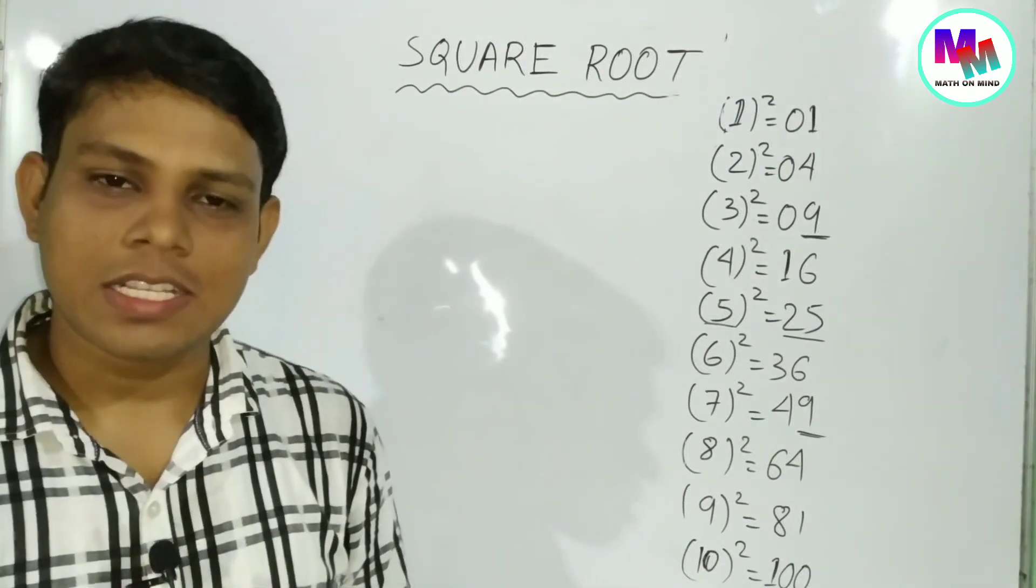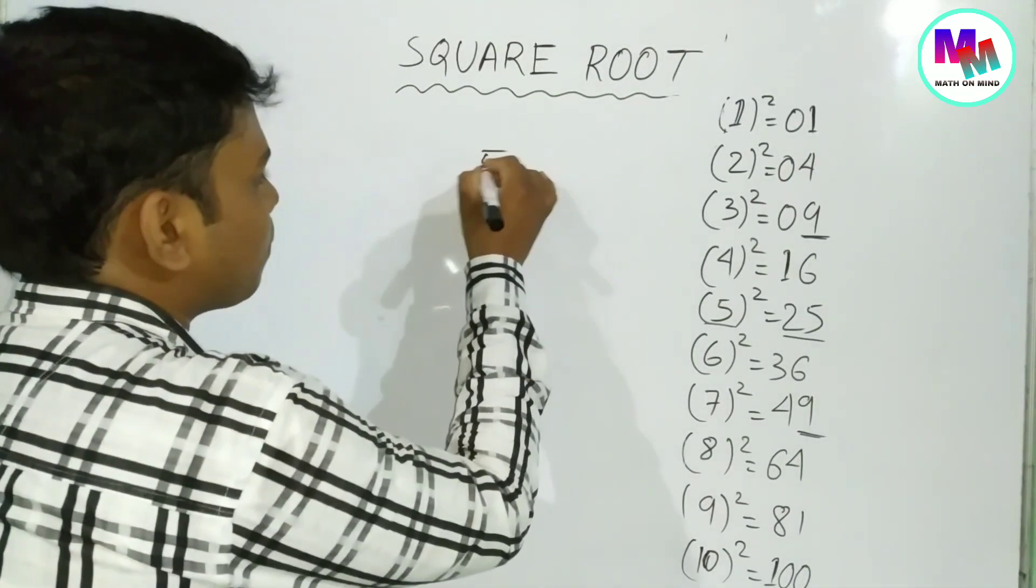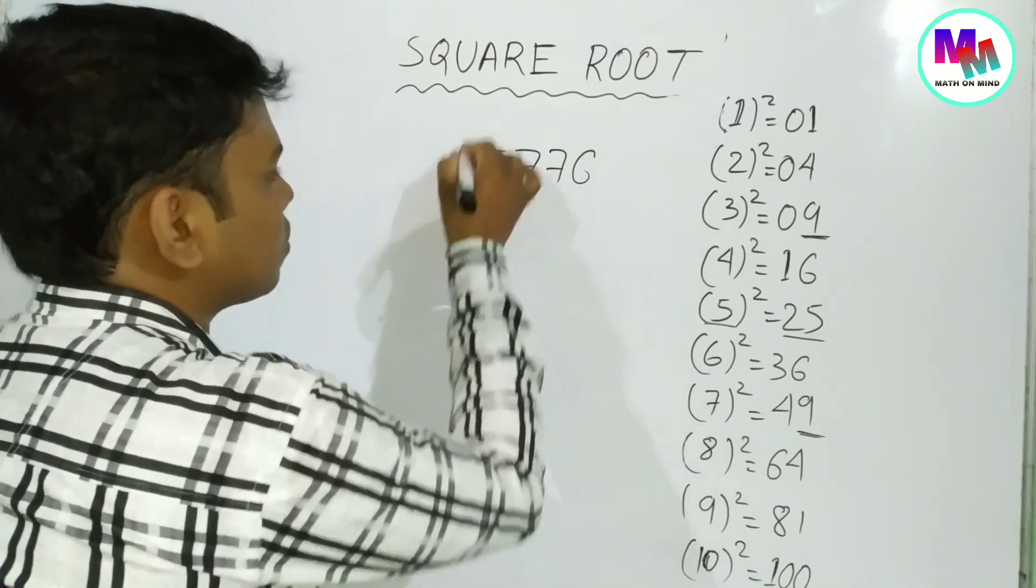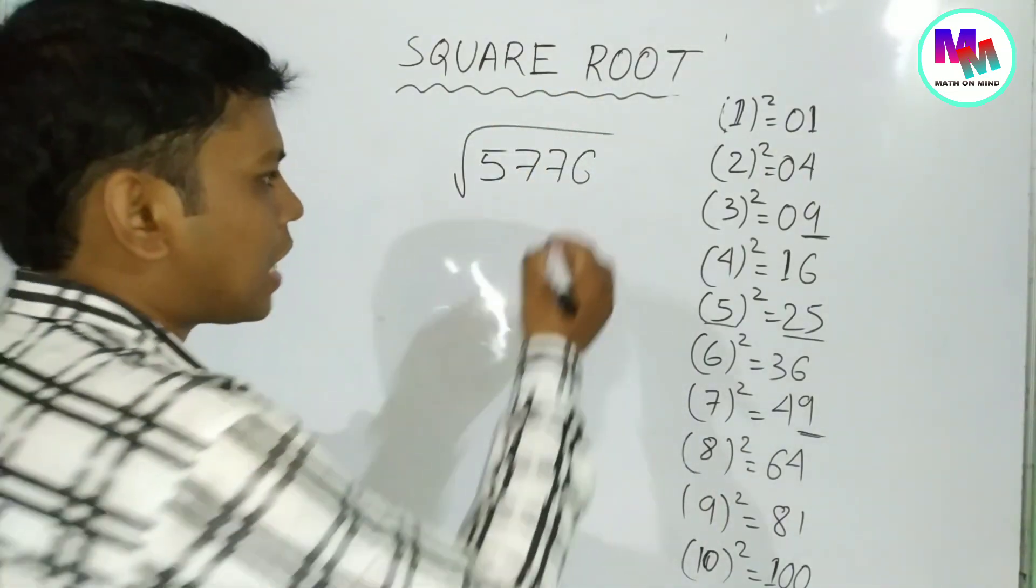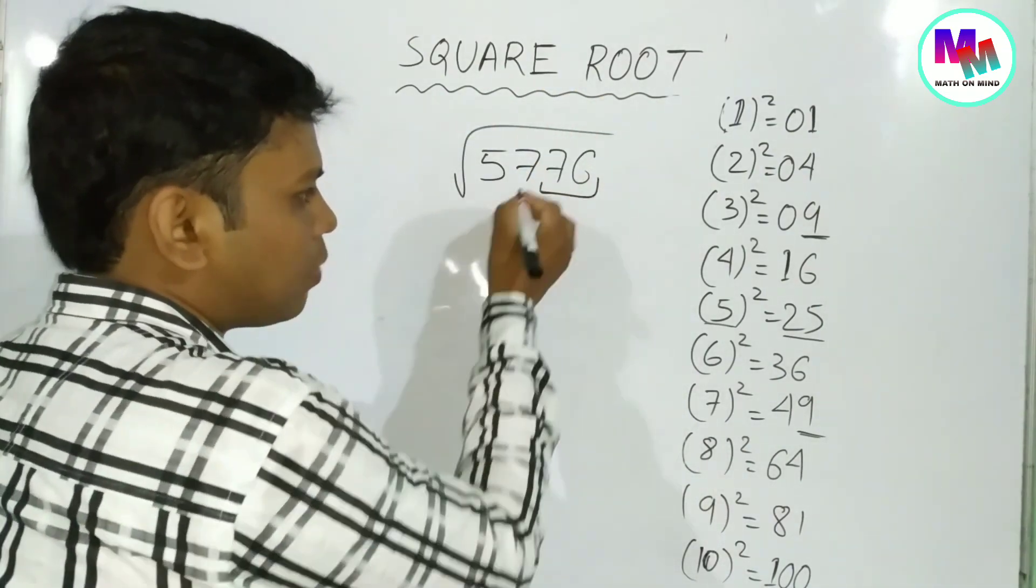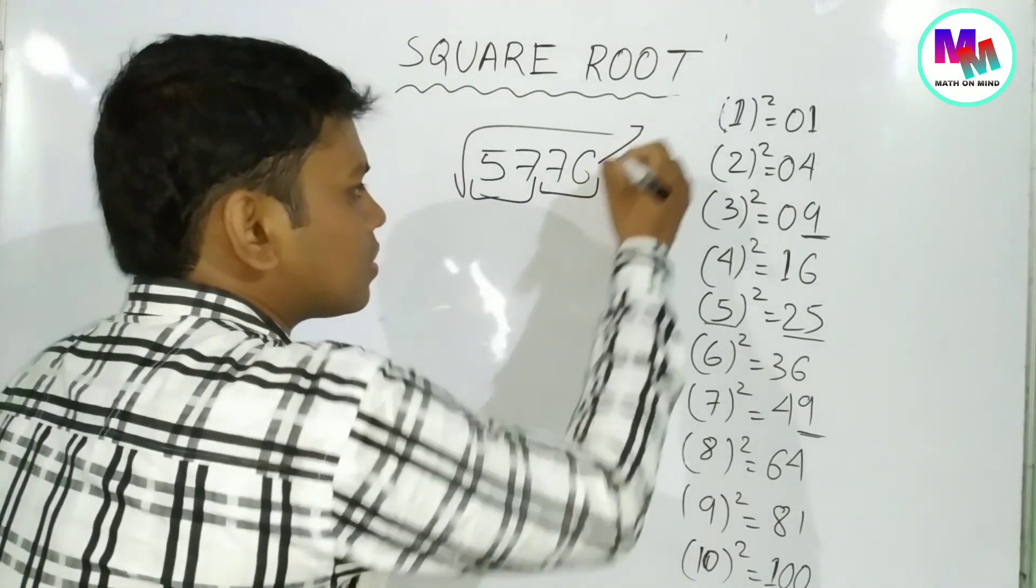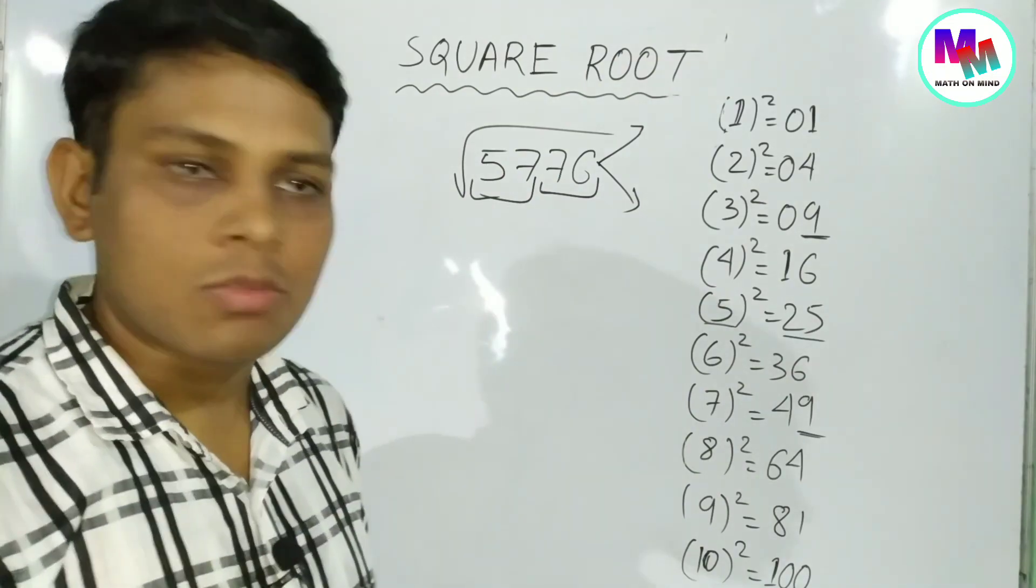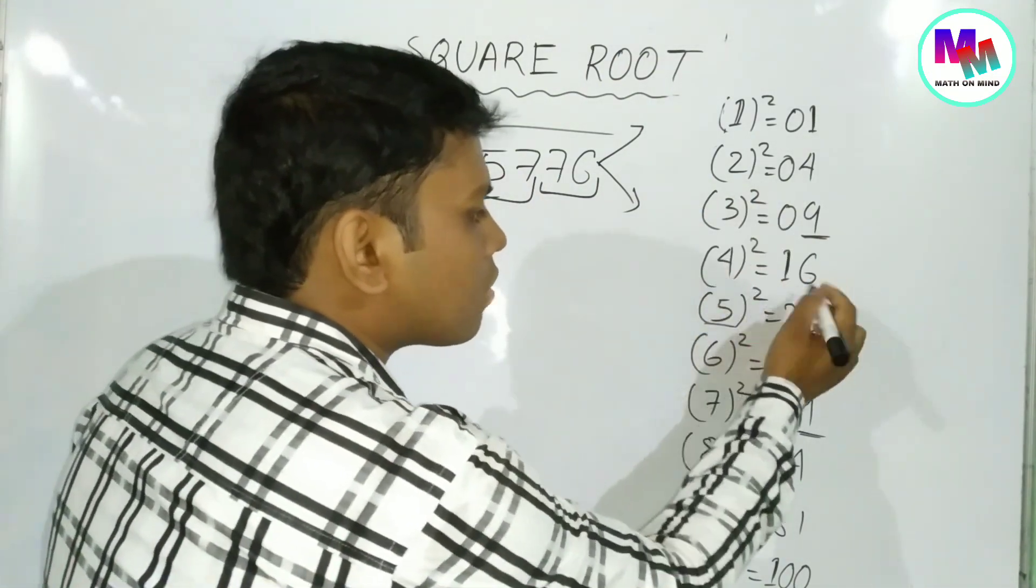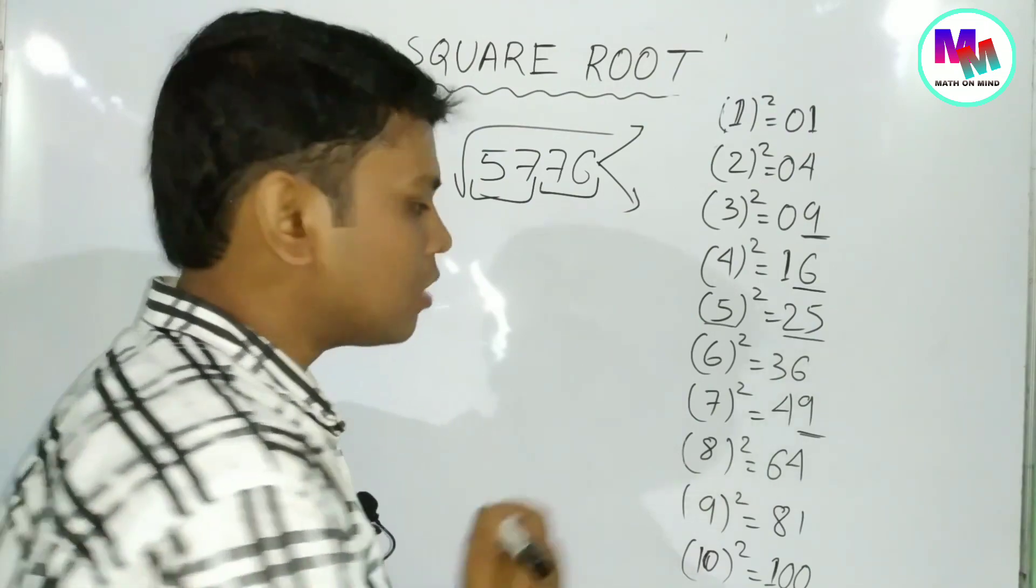Let me show an example. We'll take this number. Let's find the square root. We'll use the method - we pair from the right. So we have 5 and 29. We need to find the square root.